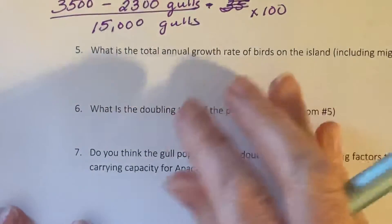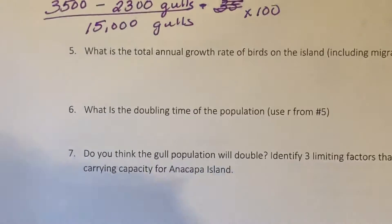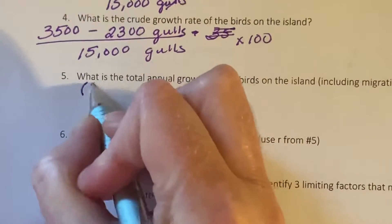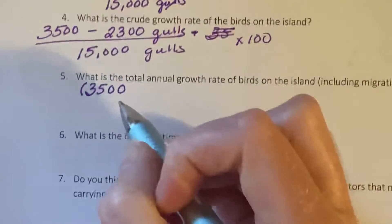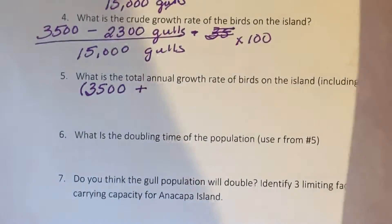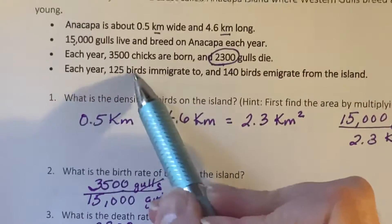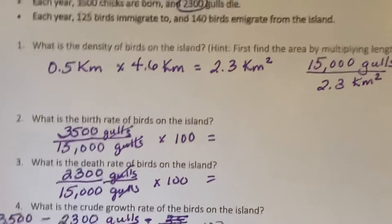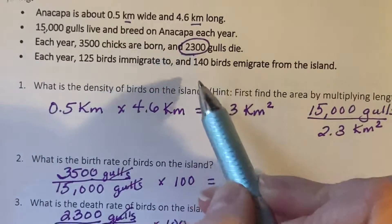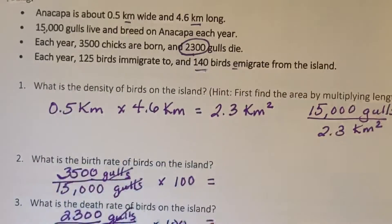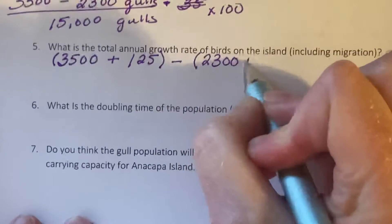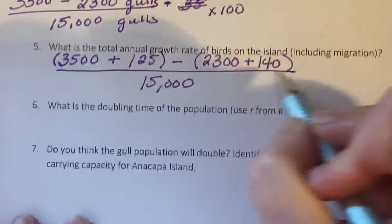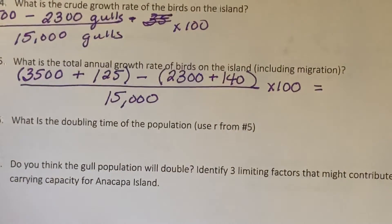Total annual growth rate including migration — now we use the full formula: births plus immigration, minus deaths plus emigration, over total population, times 100. So that's 3,500 plus 125 immigrating in, minus 2,300 deaths plus 140 emigrating out, over 15,000, times 100. Go ahead and do that math.